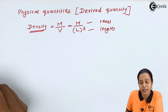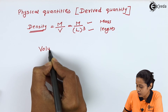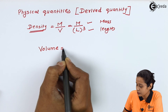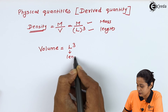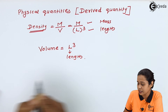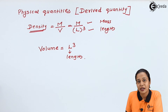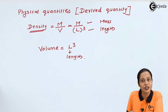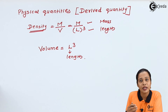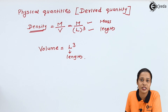Taking another example, consider volume. Volume is nothing but L cubed, where L is length. So if you want to find out volume, we have to take help of length. Again, volume is a derived quantity. We know there are seven fundamental quantities, so excluding those seven, all remaining quantities fall in the category of derived physical quantities.